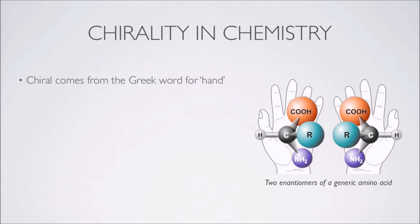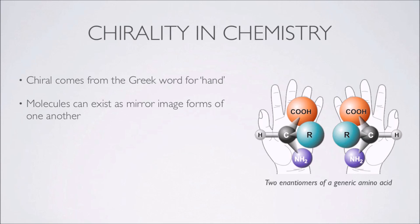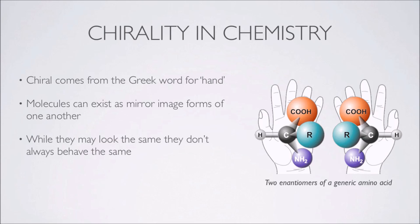The term chiral derives from the Greek word for hand. The concept here being that just as your left hand and your right hand are mirror images of one another — identical and yet opposite — so too organic compounds can exist as mirror image forms of one another all the way down at the molecular level. But although they may look the same, they don't always behave the same.